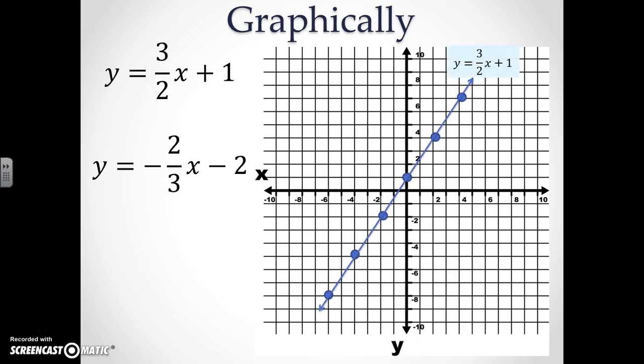Our next equation has a y-intercept of negative 2. So we are going to put a point on negative 2, and it has a slope of negative 2 thirds. So we are going to go down 2 units and move to the right 3 units. Once again, we are going to continue with this pattern and connect our points.